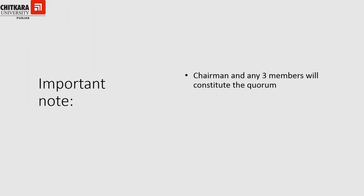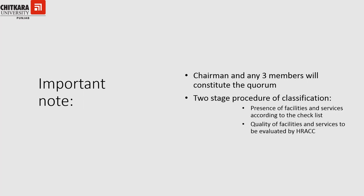An important point: any three members plus the chairman can constitute a quorum, meaning proceedings can proceed with the chairman and any three other members present. The HRACC classifies hotels based on two criteria: first, checking the presence of facilities and services according to their checklist, and second, evaluating the quality of those facilities and services according to the prescribed norms.